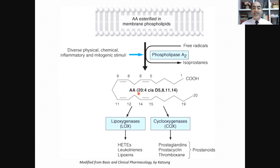This arachidonic acid will be a substrate for either cyclooxygenase enzyme or lipoxygenase enzyme. Cyclooxygenase, COX, will act on arachidonic acid and produce prostanoids: prostaglandins, prostacyclins, and thromboxane.